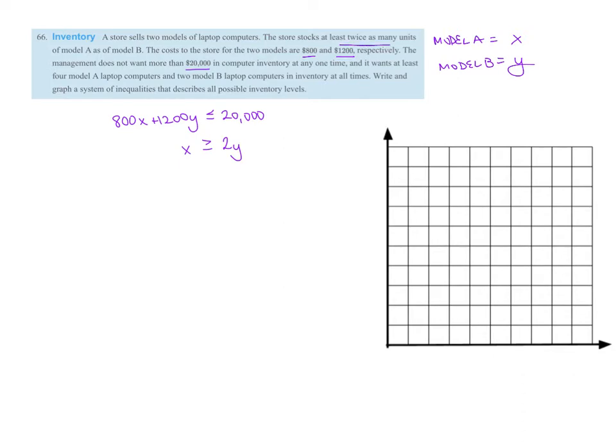Next we have, it wants at least four Model A laptops. So at least, so greater than or equal to four. And then it says at least two Model B laptops. So Y has to be greater than or equal to two. So here are our inequalities.